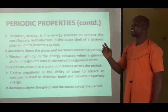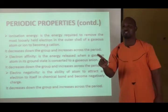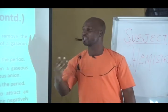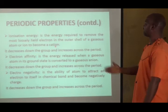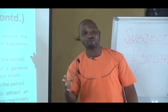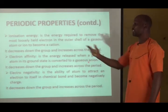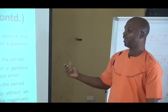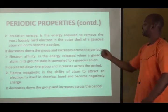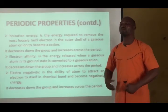Ionization energy is the energy required to remove the most loosely held electron in the outermost shell of a gaseous atom or ion in its ground state. These definitions are very important — they are either two marks or zero in exams. Ionization energy decreases down the group and increases across the period. Electron affinity is the energy released when a gaseous atom in its ground state is converted to a gaseous anion. Like ionization energy, it decreases down the group and increases across the period, with halogens having the highest electron affinity as well as electronegativity. Electronegativity is the ability of an atom to attract electrons to itself in a chemical bond — it decreases down the group and increases across the period.